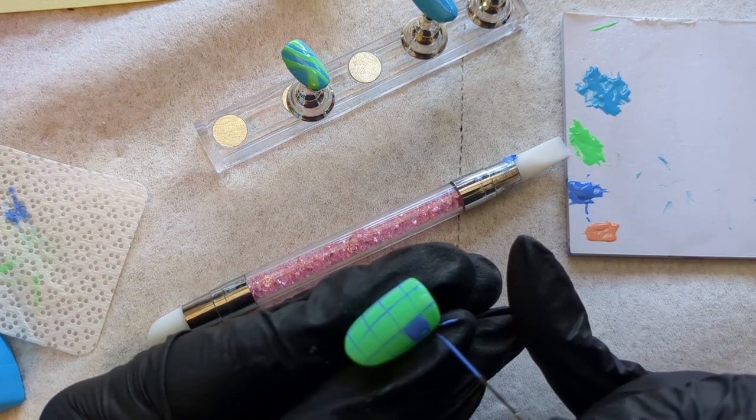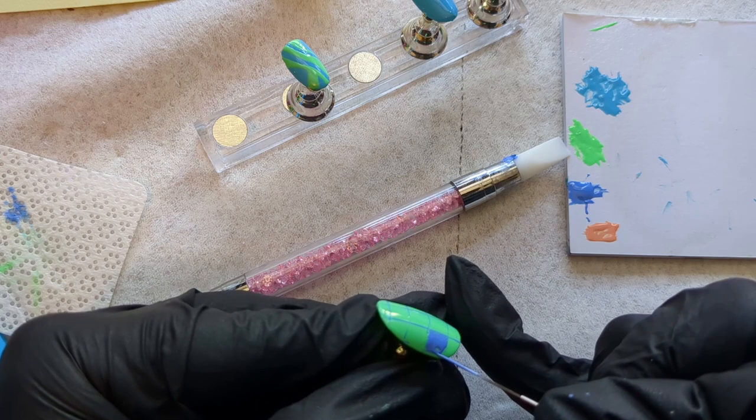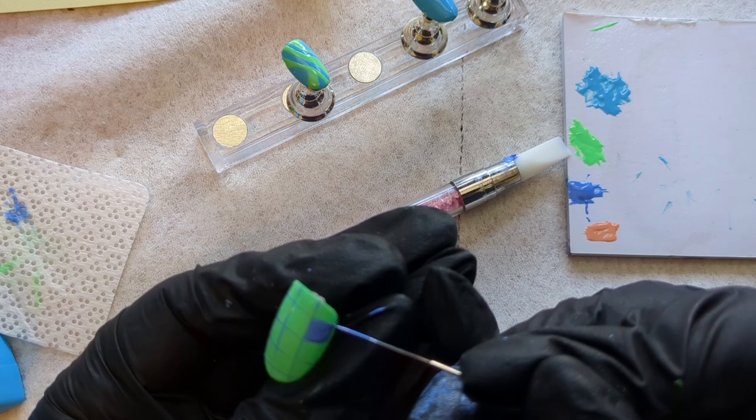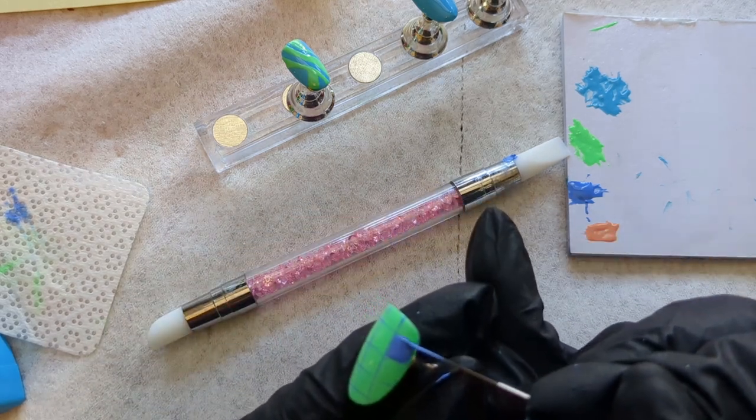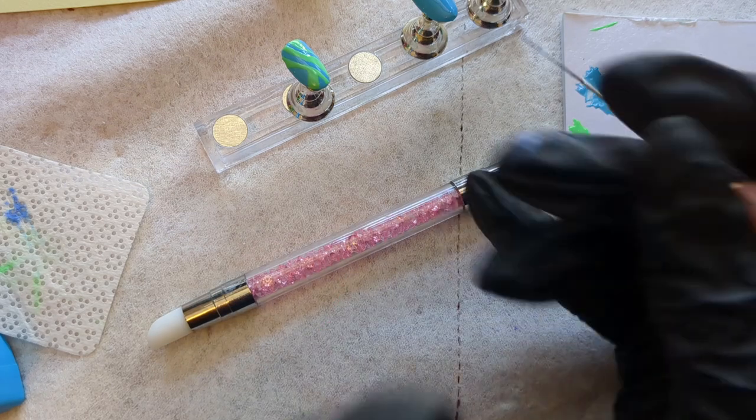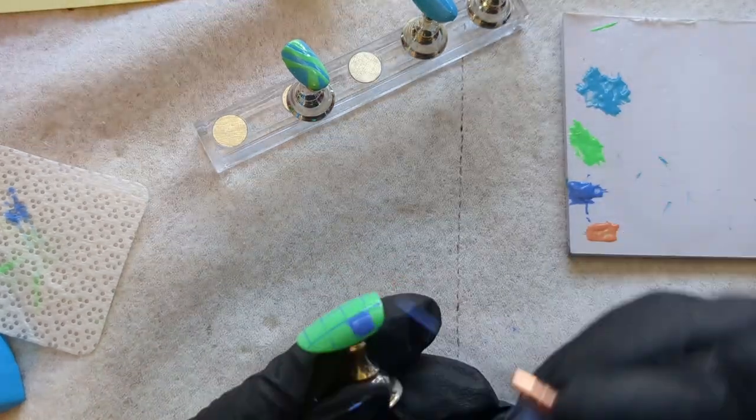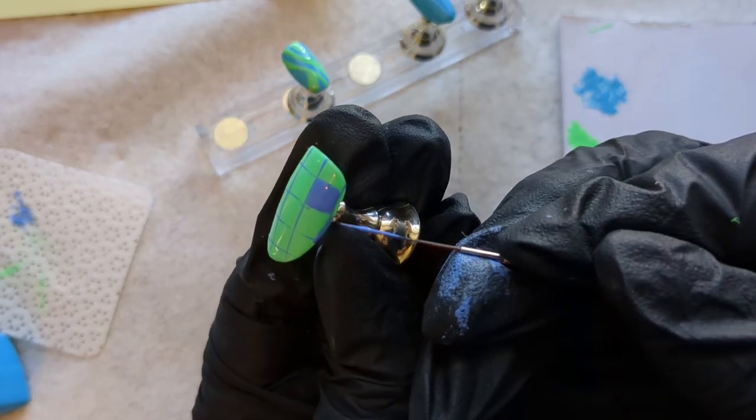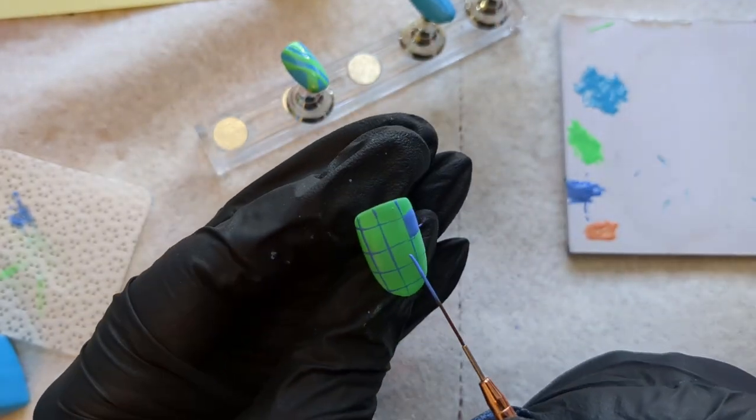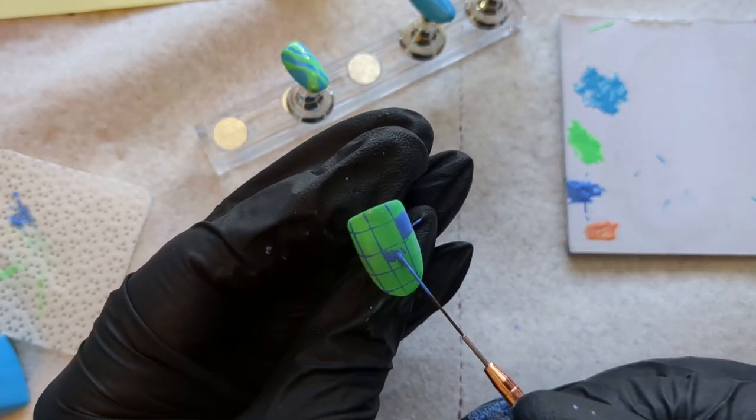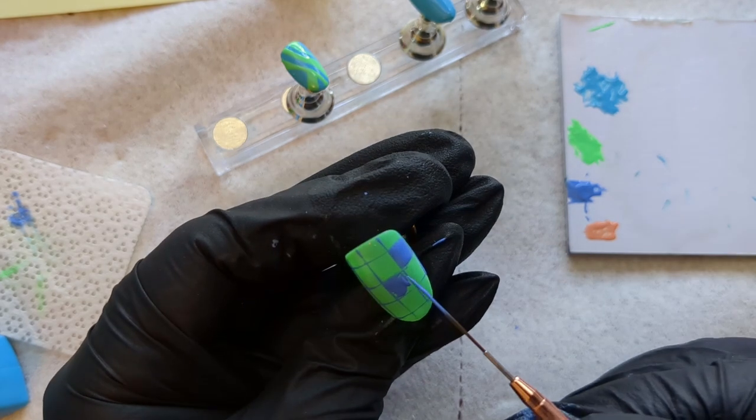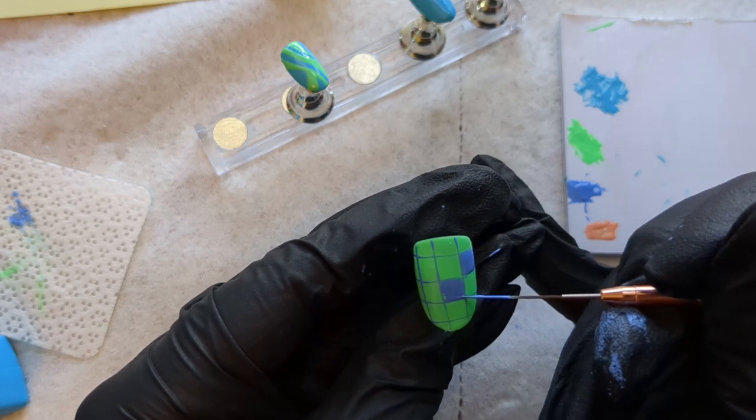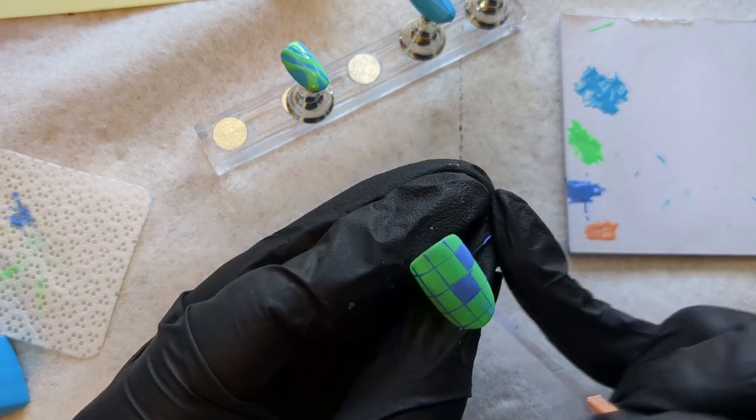One thing you can do is once you lay down the initial outline - what you see on the nail right now minus that block I've filled in - you can flash cure that into place. It makes it easier if you want to clean up, if you paint over a line or something. You can just do that without losing your whole outline. But I wasn't totally sure I wanted to use that outline because a couple of my lines weren't perfectly even, so I didn't flash cure it, and then cleanup was a little more difficult.